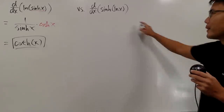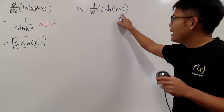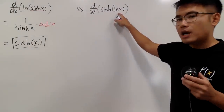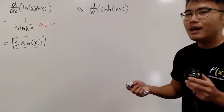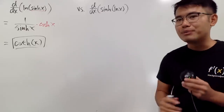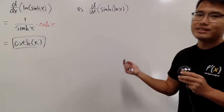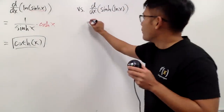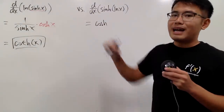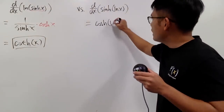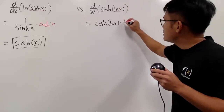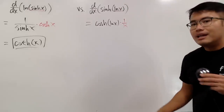For the second one, we have sinh of ln x. You can differentiate this first and then multiply by the derivative of ln x — that's one way to do it. Or you can actually simplify this expression first and then differentiate. I will do it as-is first and then show another way. To differentiate sinh, we get positive cosh, with input ln x. The chain rule says we have to multiply by the derivative of ln x, which is 1 over x.